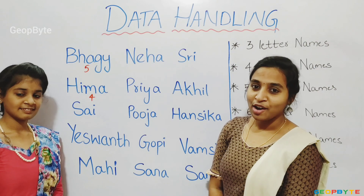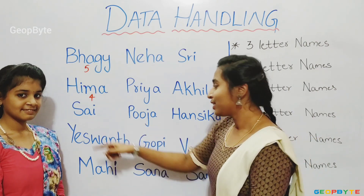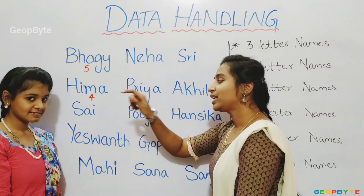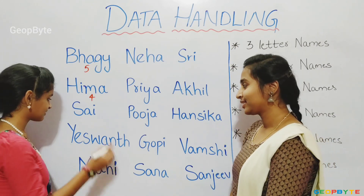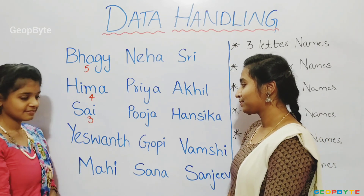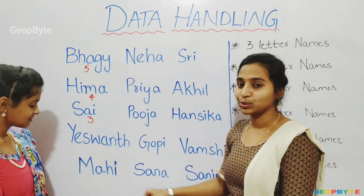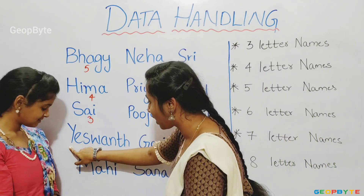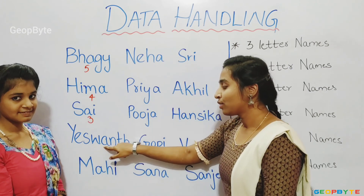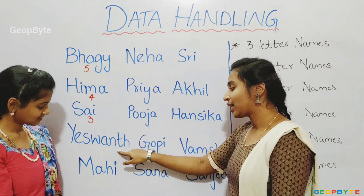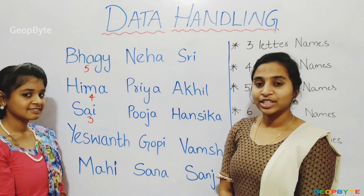Now let us count how many letters are there in the name Sigh. One, two, three. There are three letters in the name Sigh. Now let us count the next name. One, two, three, four, five, six, seven, eight. There are eight letters in that name.